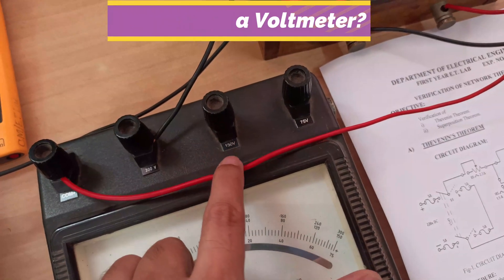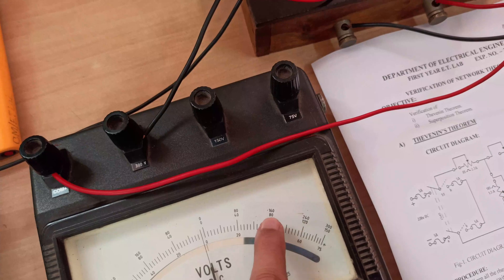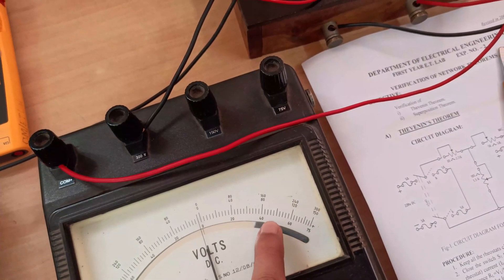If you're connecting it to the 150 volt range, you will be looking at the readings which is at the middle. And if you're connecting for 75 volt, you will be looking at the readings which is the lower scale.